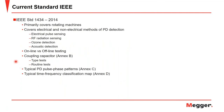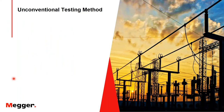Here we have the current IEEE standard, IEEE 1434. This primarily covers rotating machines but also covers electrical and non-electrical methods of PD detection, such as electrical pulse sensing, RF radiation sensing, ozone detection, and acoustic detection. It has good coverage of online versus offline testing, covers the coupling capacitor in Annex B, typical PRPD patterns in Annex C, and typical time-frequency classification maps in Annex D.